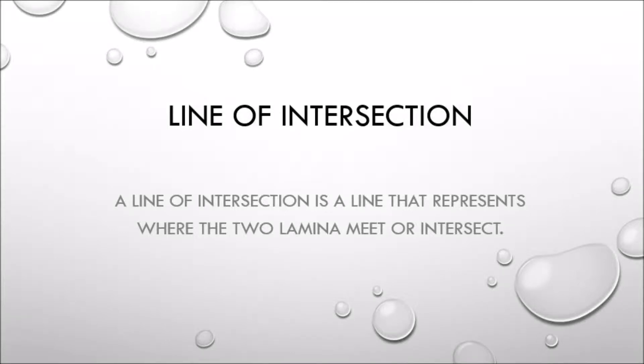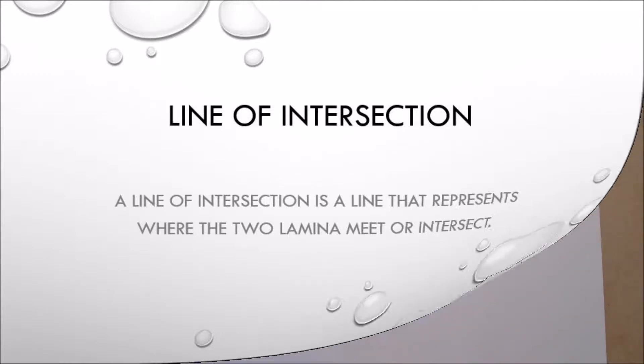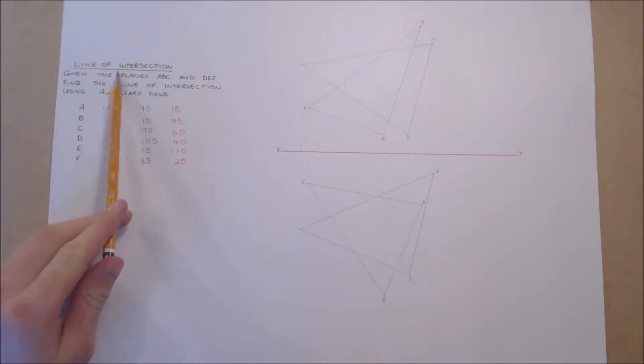A line of intersection is a line that represents where two planes meet or intercept. Given the planes ABC and DEF, find the line of intersection using auxiliary views.